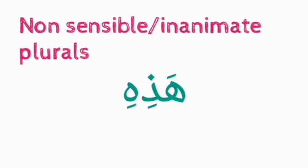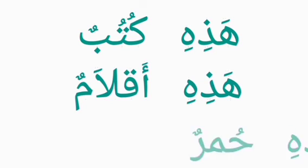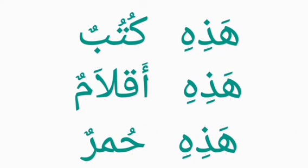For non-sensible and inanimate plurals, you address them with hazihi, using it as if they are feminine in nature. Non-sensible things are assumed to be feminine, and they are in plural form only. Examples: hazihi kutubun — these are books; hazihi aklamun — these are pens; hazihi homorun — these are camels. You assume that these non-sensible and inanimate plurals are all feminine singular.